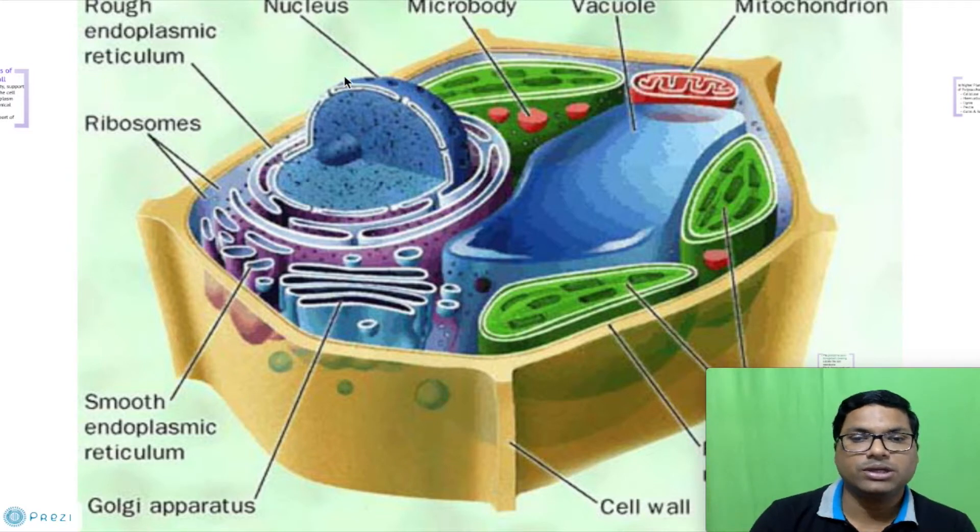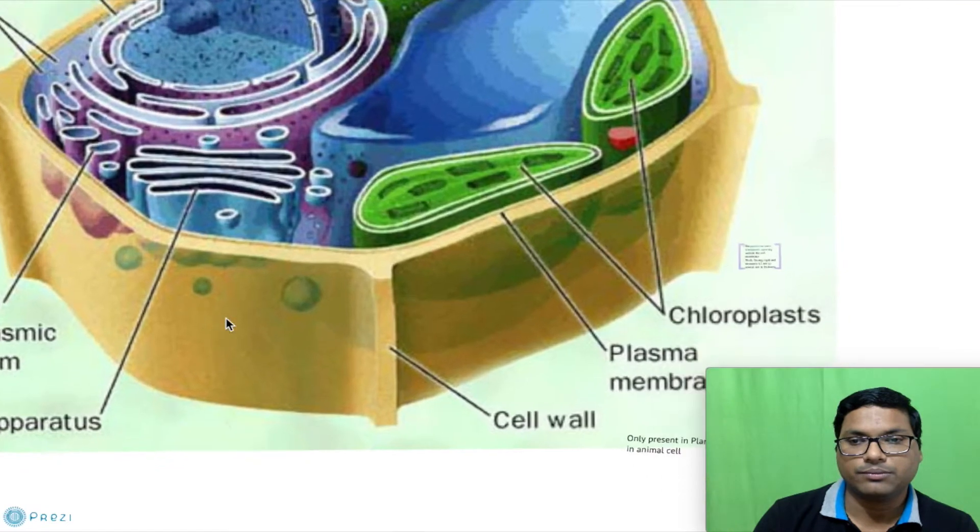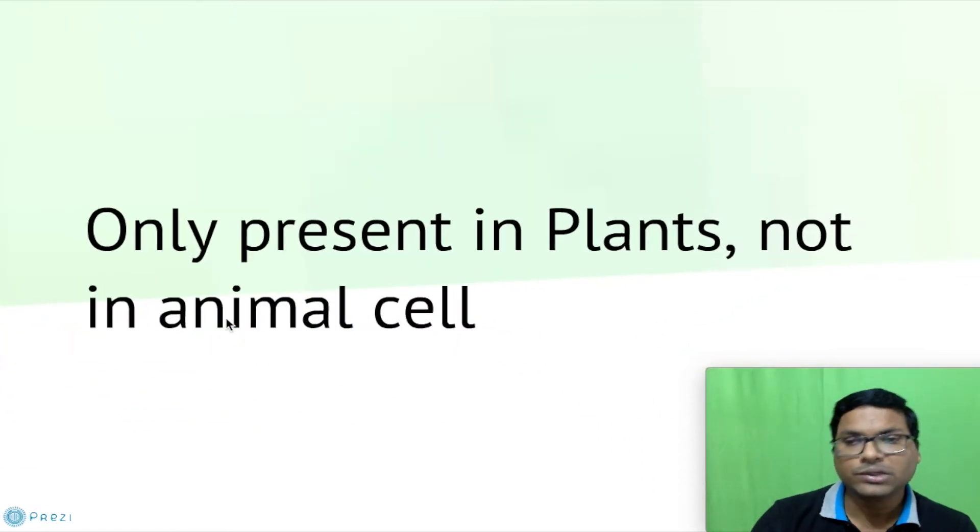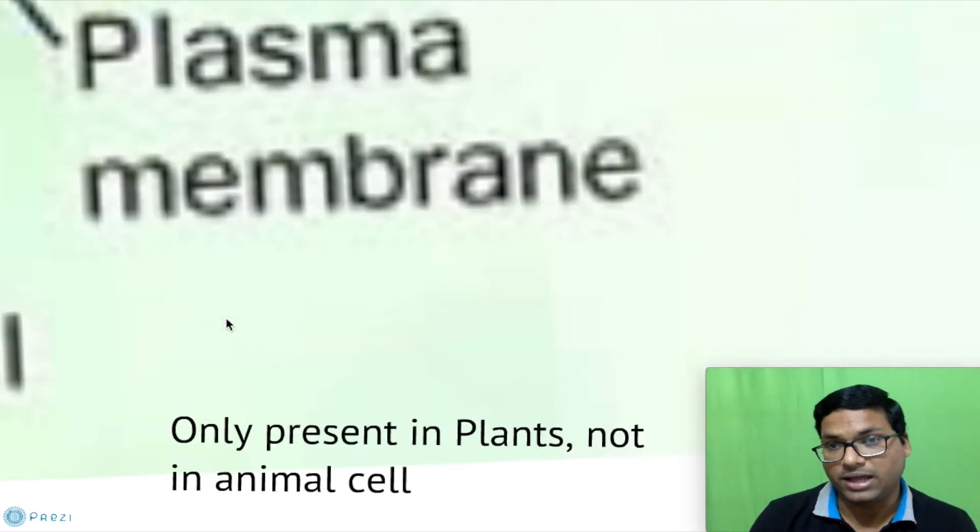Now you can see in this diagram, the cell wall which is outer to the cell membrane or the plasma membrane. Obviously, a basic character only present in the plants and not in the animal cell.